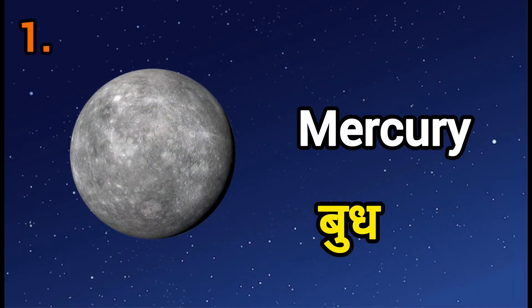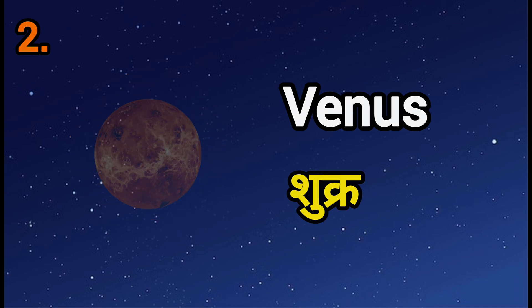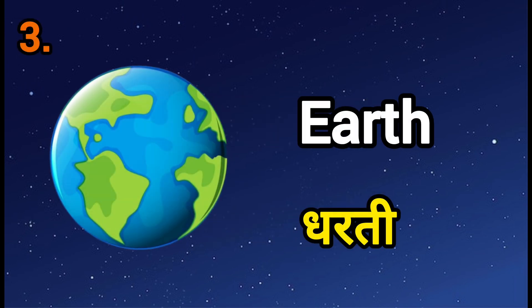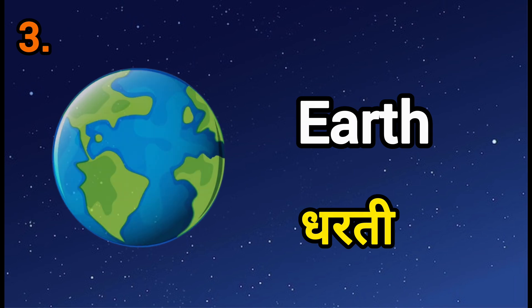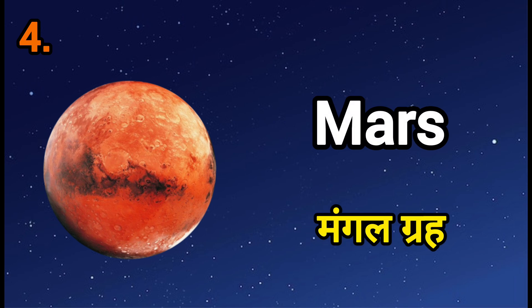Number 1: Mercury — Mercury means Booth. Number 2: Venus — Venus means Sukra. Number 3: Earth — Earth means Dharati. Number 4: Mars — Mars means Mangalgrah.